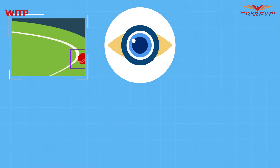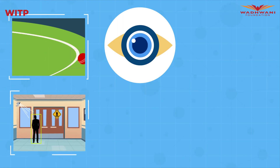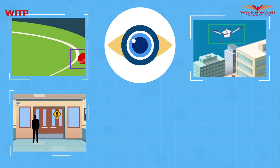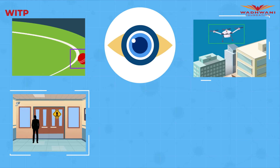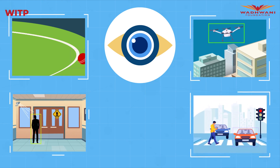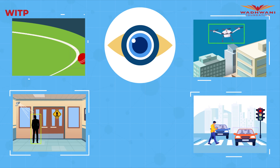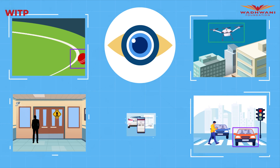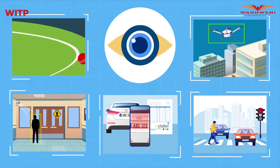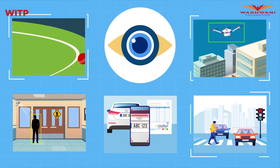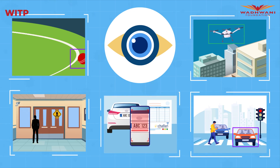Computer vision can also help in detecting events, such as a cricket ball going past the boundary rope. From a government perspective, it could detect entry of a person or a drone in a restricted area like government offices, or a car violating the zebra crossing when the traffic light is red. Computer vision is also used by traffic police today to read number plates and generate challans.